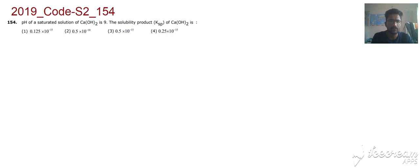Hello students, now we will solve question number 154 of Code S2 2019. It is asked from the chapter chemical equilibrium and ionic equilibrium. The pH of saturated solution of Ca(OH)2, calcium hydroxide, is 9. Find the solubility of Ca(OH)2.